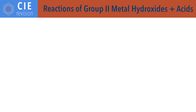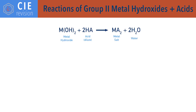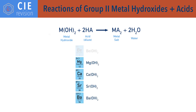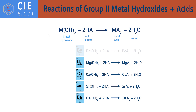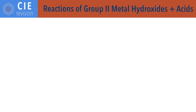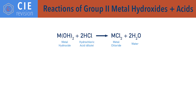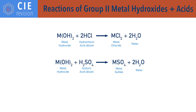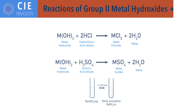Group 2 metal hydroxides don't react with water, but do react with dilute acids to form metal salts and water, with a general reaction of metal hydroxide plus acid to salt plus water. The salt formed depends on the acid used: metal hydroxide plus dilute hydrochloric acid forms metal chloride and water; metal hydroxide plus dilute sulfuric acid forms metal sulfate and water. The salts formed are colourless in solution; however, for the reaction of barium hydroxide with dilute sulfuric acid, barium sulfate (BaSO₄) is produced, and as barium sulfate is insoluble, a white precipitate forms.